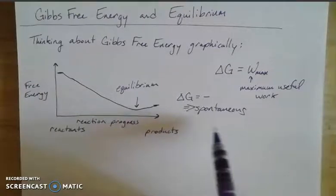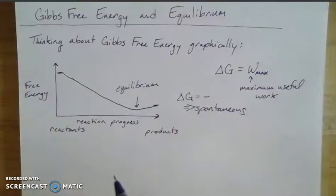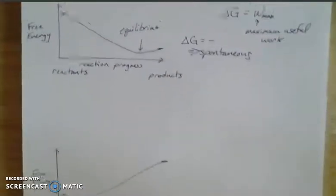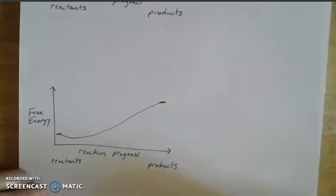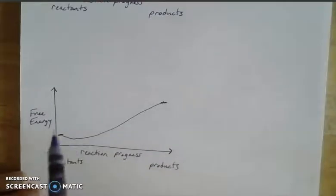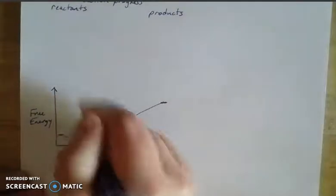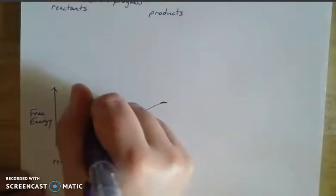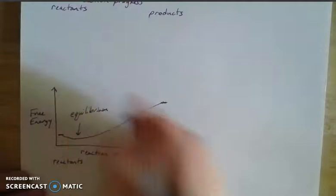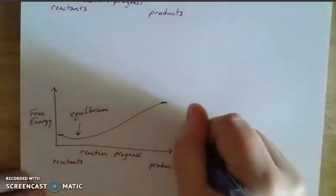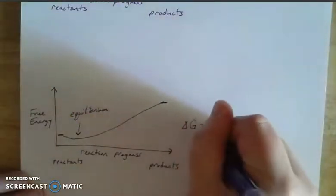Well, my curve would be flipped, because the sign on my delta G would be positive. So we might have something that looks a little bit more like this, where we have reactants with lower free energy, products with higher free energy. This minimum of my curve here is still equilibrium.